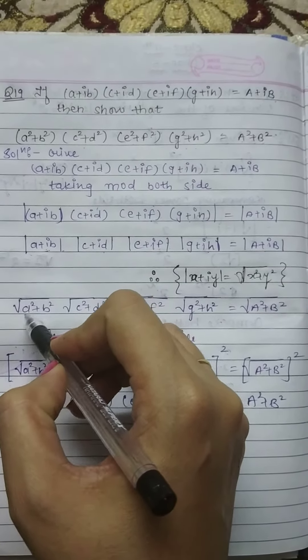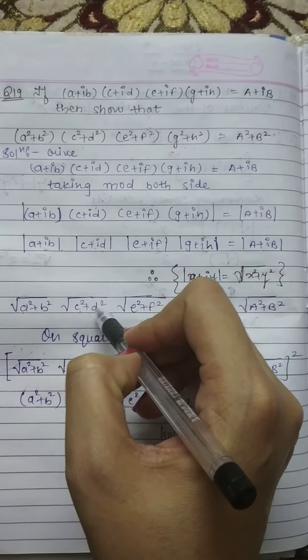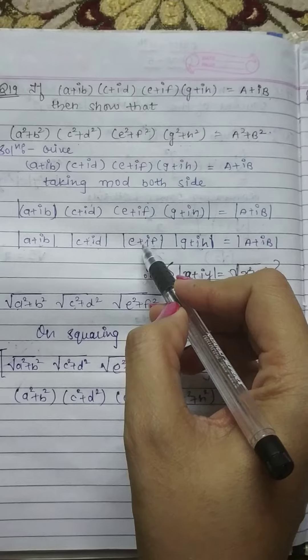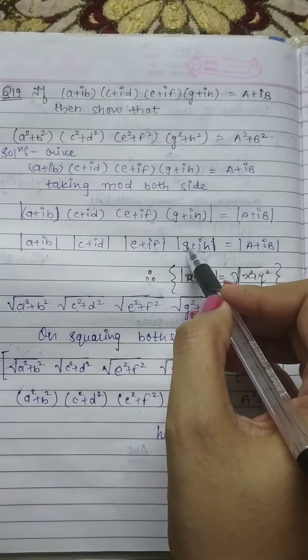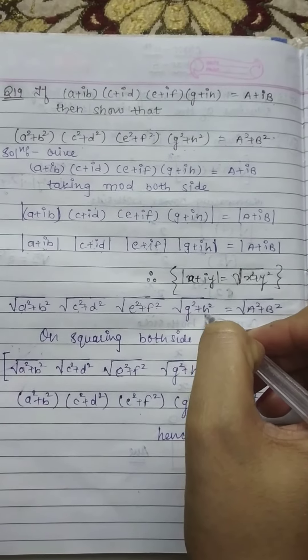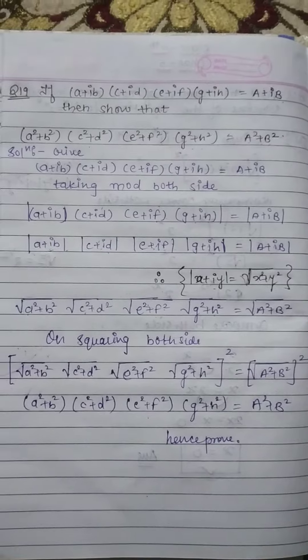If we apply formula, this will be under root of A²+B². Here we apply, then C²+D². Here, real is E so E², imaginary F so F². Here G²+H². And here A²+B².